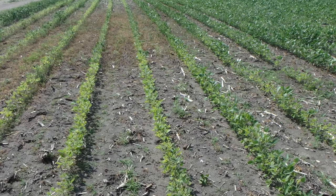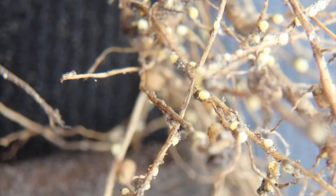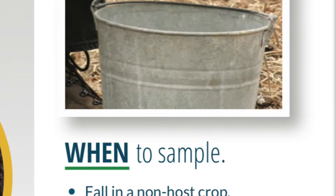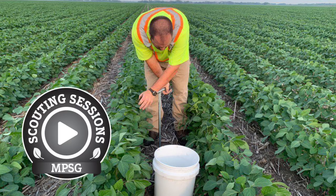SCN is more easily identified during dry years on lighter soils, since above-ground symptoms are more likely to appear even at lower cyst levels. If you suspect SCN, soil samples may be collected and sent to AgVise, or you can contact MPSG, Manitoba Agriculture, or Mario's lab at the U of M for confirmation.